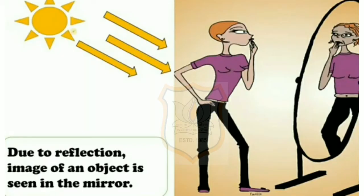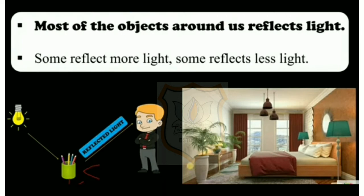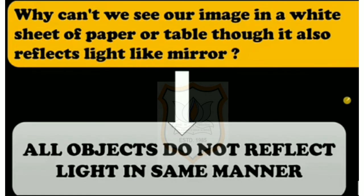Due to reflection, the image of an object is seen in the mirror. Most of the objects around us reflect light — some reflect more light, some reflect less. Why can't we see our image in a white sheet of paper or a table, though it also reflects light like a mirror? All objects do not reflect light in the same manner.